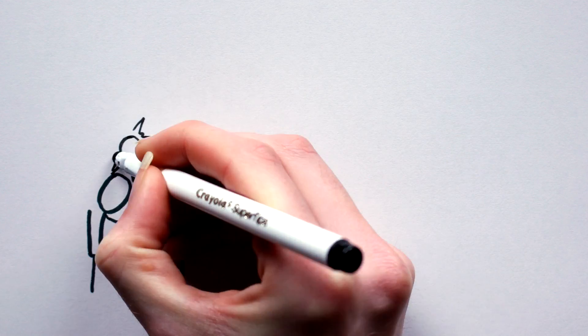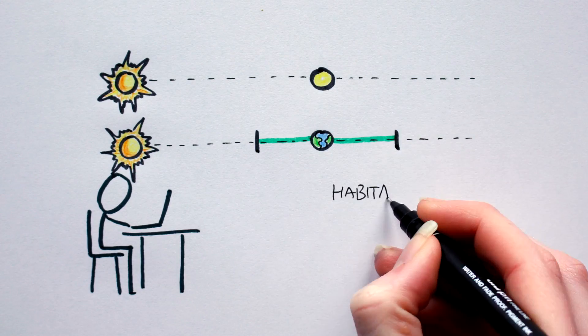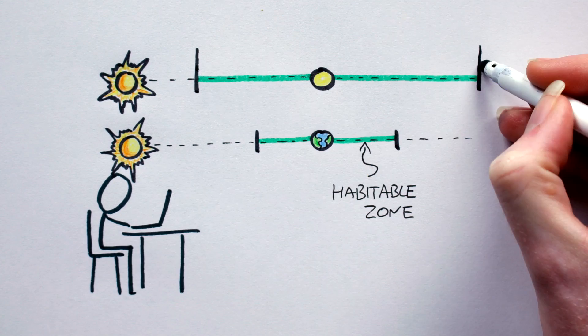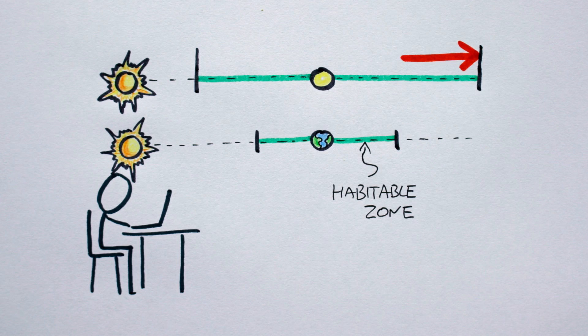Computer simulations modeling desert planets have shown that they may not be as barren as one might immediately think. For one thing, their habitable zones may be much larger than that of Earth-like planets. Lack of surface water means less snow and ice that can reflect sunlight back into space. As such, the planet may absorb more heat, resist global freezing, and expand the outer limits of its habitable zone.